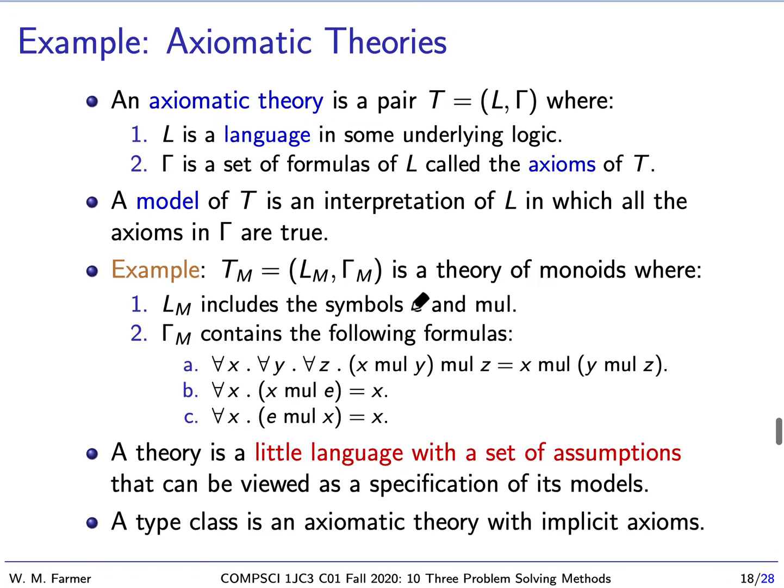Finally, I'm going to end with another example of a little language. It's actually a little more than a little language; this is what's called an axiomatic theory. It's a language in some underlying logic, and we have gamma, capital gamma is a set of formulas called the axioms of the theory. A model of this theory is an interpretation of L in which all the axioms in gamma are true. You can think of an axiomatic theory as a specification of a set of structures or models.